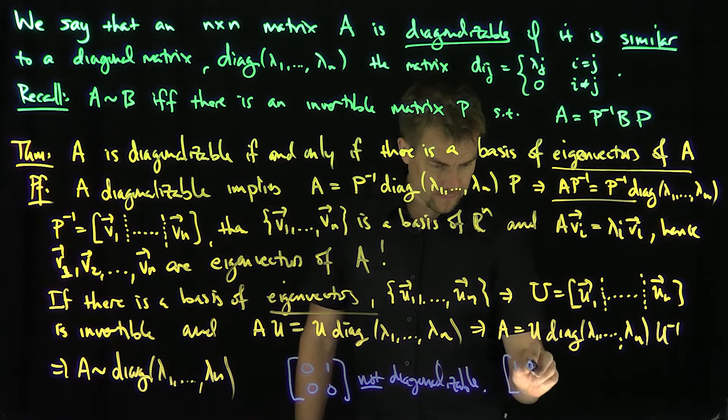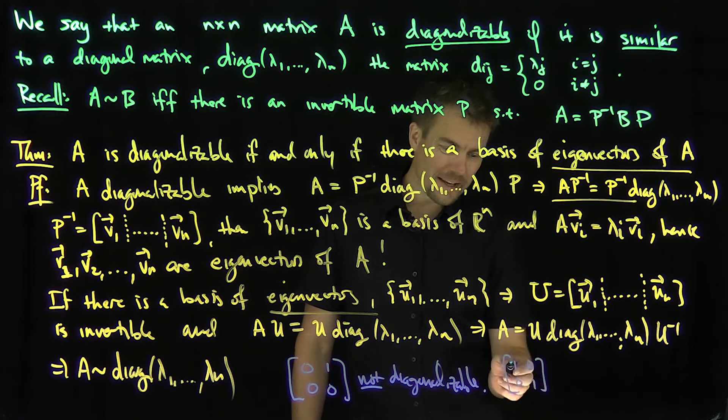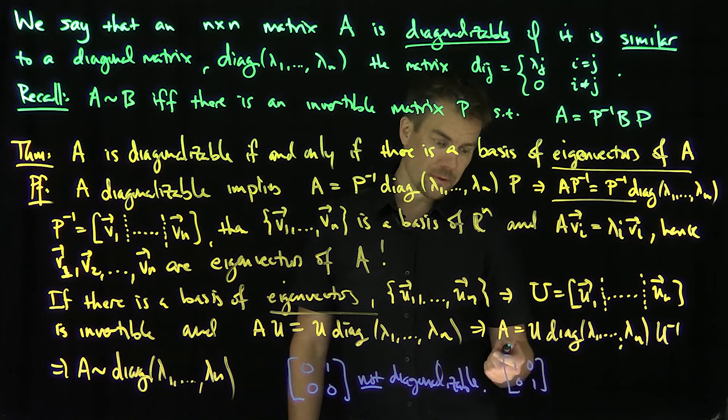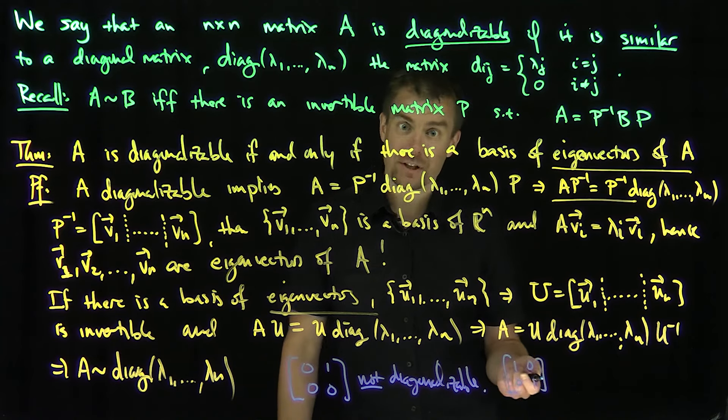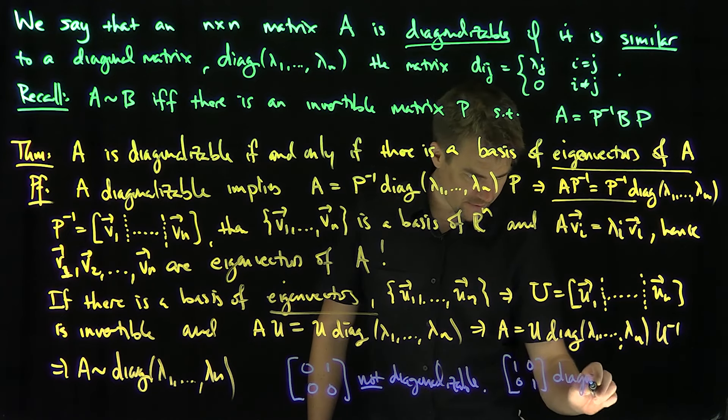Whereas if I have the identity matrix, well, the identity matrix is clearly diagonalizable. Even though it has two of the same eigenvalues, just one and one, the dimension of the kernel of identity minus identity is just going to be two-dimensional. So in other words, it's of course diagonal because it's a diagonal matrix.